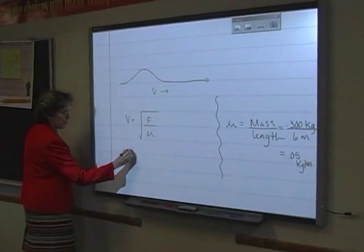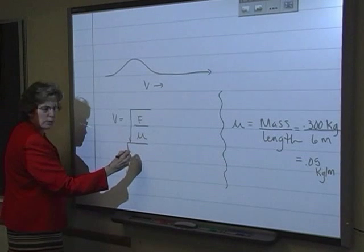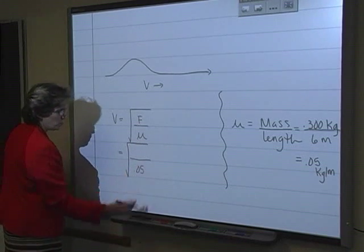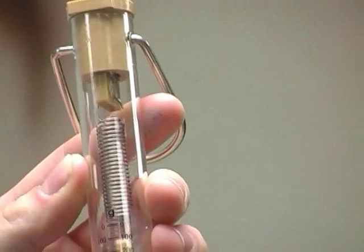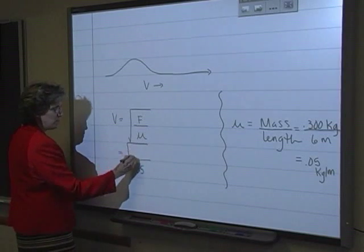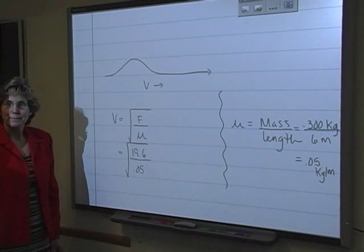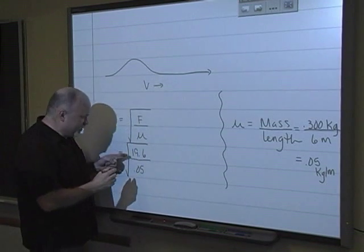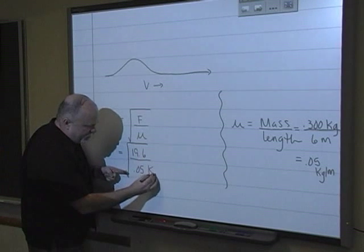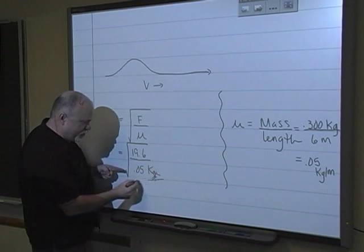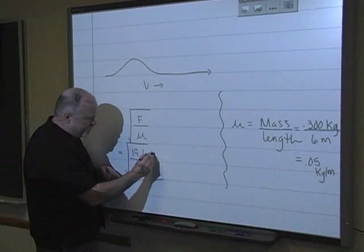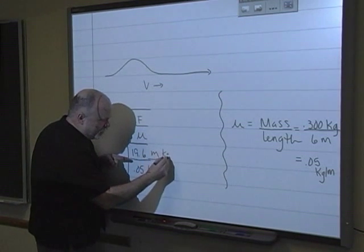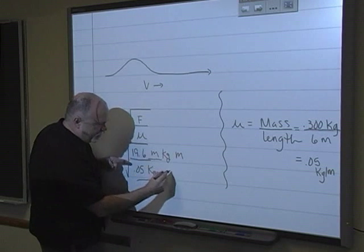Alright, back over to our velocity formula. The velocity formula has the force — which I'm going to leave alone for a second — over the mass-to-length ratio, which is 0.05. I'm going to randomly pick a force value of 19.6. Excuse me just for a minute — I've got to put in units, because this is a physics problem, plus I get to use the smart board. The mass-to-length ratio was kilograms per meter, and the units of force are newtons, which are kilogram meter per second squared.